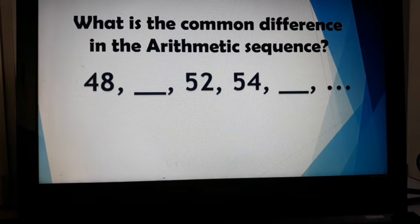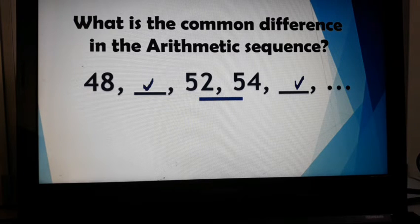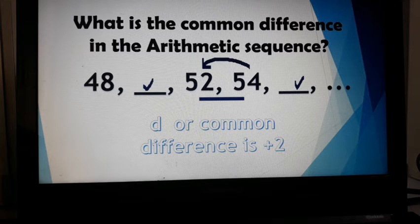Example number 2. Notice that there are missing terms now. But it's still possible to get the common difference in this arithmetic sequence because there are two consecutive terms, and those are 52 and 54. As long as there are adjacent terms, you can get the common difference without using the formula. 54 minus 52 will give us the common difference of positive 2.